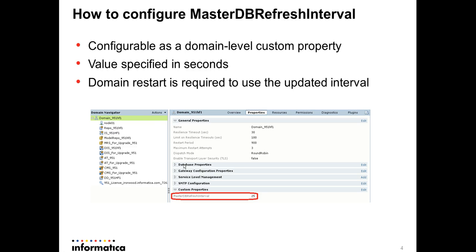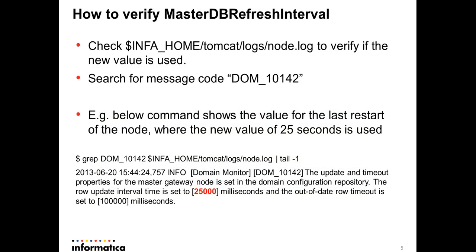Once you set these values, you need to restart all the nodes in the domain so they reflect the newly modified values. You may also want to verify after restarting that the new values have been picked up — this can be done by checking the logs. There is a specific node.log file under INFA_HOME/tomcat/logs which will contain the actual value being used.